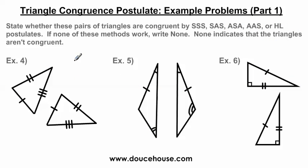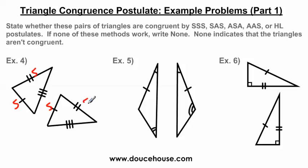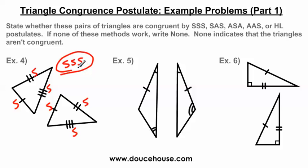Same question, but notice the triangles are rotated or flipped around compared to the previous ones, making this a little trickier. I'm still going to look at the indicators: this side corresponds to this side, this side to this side, and this side to this side. Since each side has a congruent corresponding side, I have three sides — that's side-side-side, the only postulate with three S's. These two triangles are congruent by the side-side-side postulate.